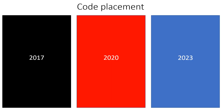Let's talk about code placement. In the 2017, it is 406.9C, and it happens to be the same in the 2020 and the 2023. The reason I always talk about code placement is because things are moving — sections and articles are being moved and deleted — so it's super important that we establish where we're at in the code book so you can go and reference all of this yourself.